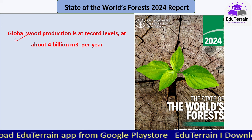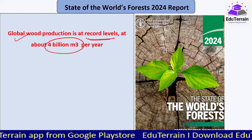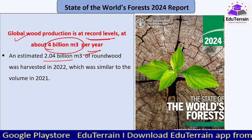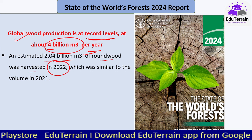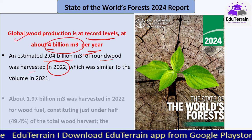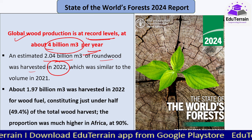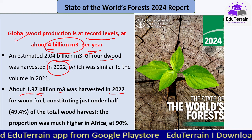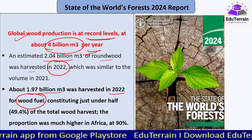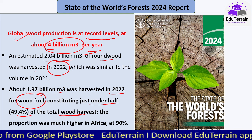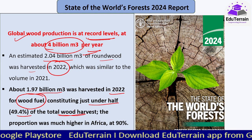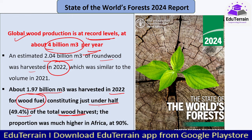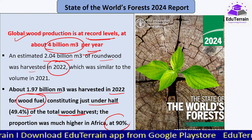Global wood production is at record levels at about 4 billion cubic meters per year. An estimated 2.04 billion cubic meters of roundwood was harvested in 2022, almost similar to 2021. About 1.97 billion cubic meters was harvested in 2022 for wood fuel alone, constituting just under half of the total wood harvest. In Africa, wood fuel accounts for 90% of total wood harvested — primarily for cooking purposes.